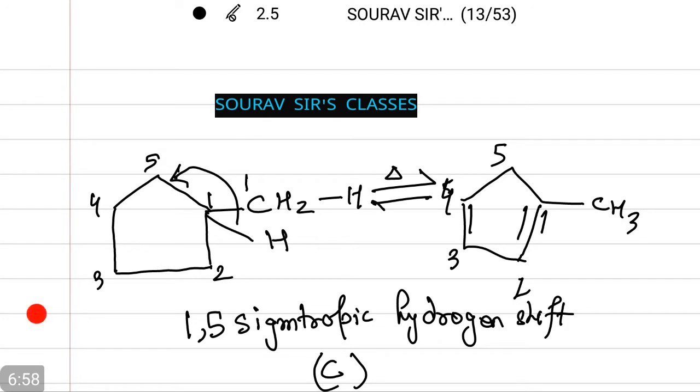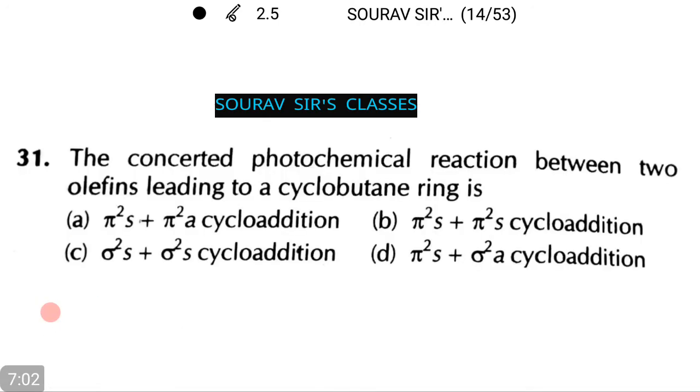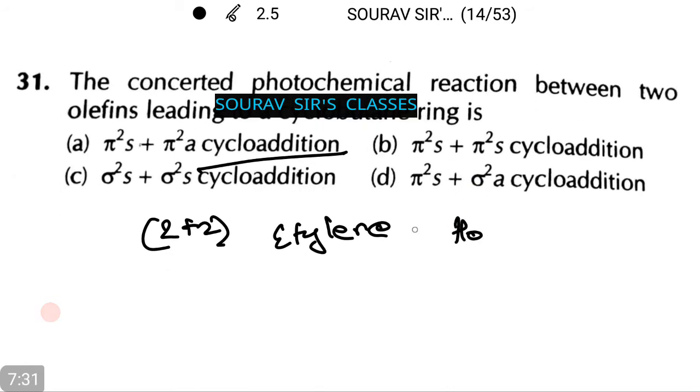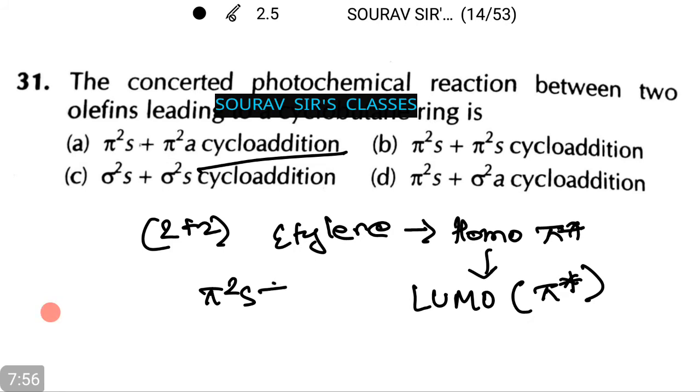Let's see another question on orbital states. The concerted photochemical reaction between two olefins leading to a cyclobutane ring is among the four options. Let's see how to do this. The photochemical 2 plus 2 cycloaddition of ethylene which involves overlap of the HOMO π star of an excited molecule with a LUMO which is also π star of a ground state molecule is superficial with respect to both the components that is π²s plus π²s.